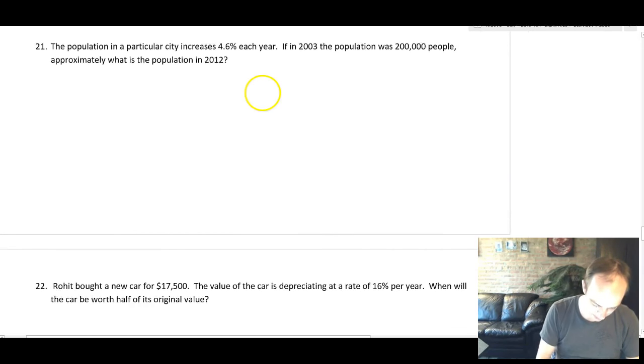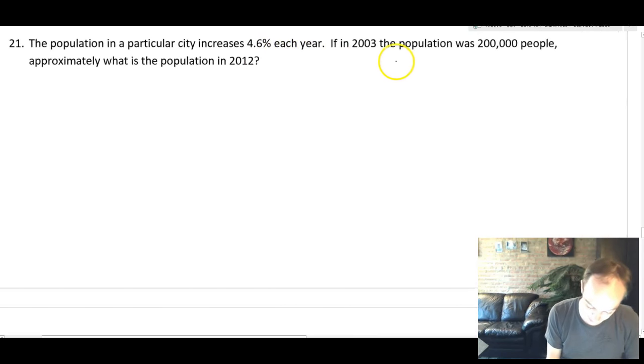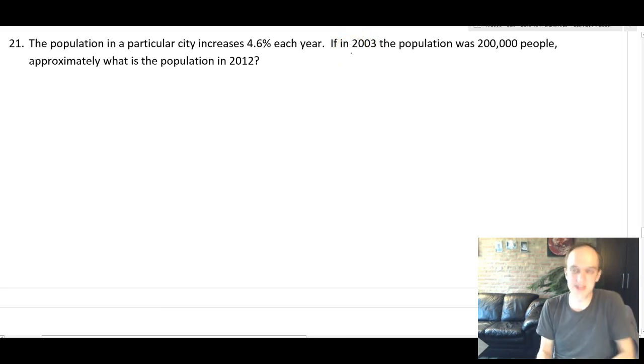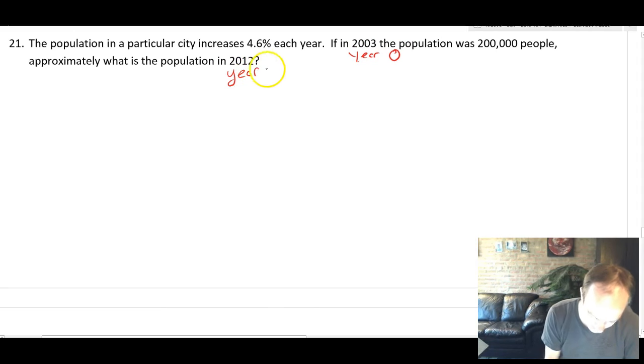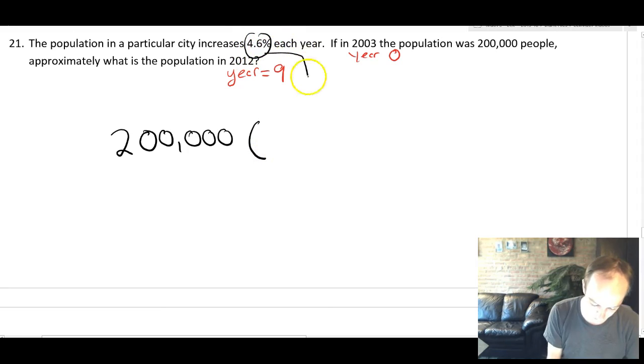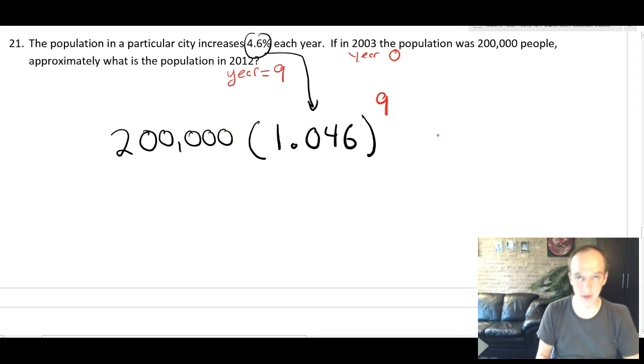Moving on to 21. The population of a particular city increases by 4.6% each year. If in 2003 the population was 200,000, what was the population in 2012? So here they're giving you some years. You need to set this through. So 2003 is going to be your year 0. 2012 is going to be year 9. So that's going to tell us what to plug in here. So it's going to be something like 200,000 times now here's this percent as a decimal. Be careful with this. 4.6 as a decimal is 0.046. So this is going to be 1.046. And then we said 2012 is 9 years later so it's going to be this to the 9th. Just plug all that into your calculator and see what you get for a final answer population.